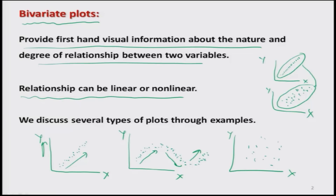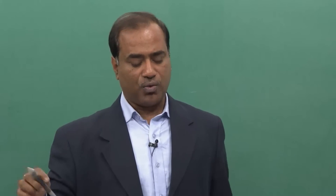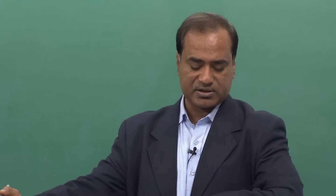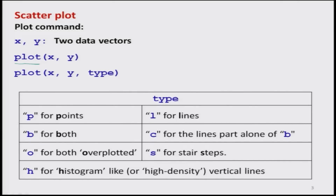We will take some examples and through them see how we can draw different types of curves. One popular and simple command in R to make bivariate plots is `plot()`. These are bivariate plots, so there have to be two data vectors. Suppose we take two variables — height and weight. For person number 1, height is 154 centimeters and weight is 60 kg.